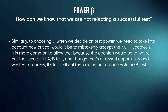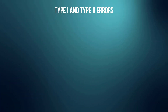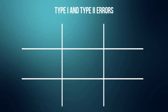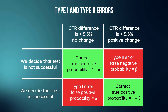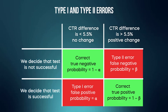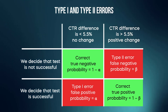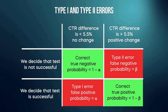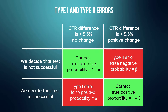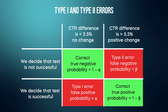It is also very common during A/B testing interviews to be asked about type 1 and type 2 errors. Let's talk about click-through rate and a minimum detectable effect of 5.5 percent change. This table shows us when we have true negative, true positive, false negative, and false positive — or type 2 error and type 1 error.